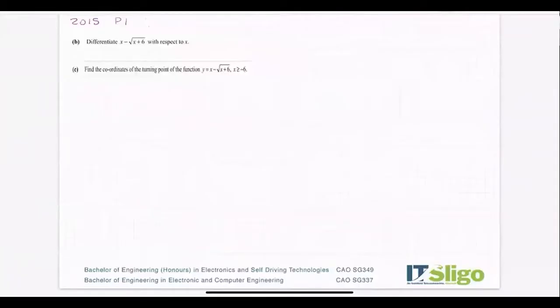Let's try another one. Let's try the 2015 one. So differentiate x minus root x plus 6 with respect to x, that's part b, and find the coordinates of the turning point of the function.